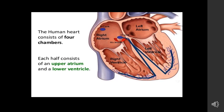The human heart consists of four chambers. Each half consists of an upper atrium and a lower ventricle. The upper two are called the left atrium and right atrium, and at the lower side are the right ventricle and left ventricle — four chambers in total. The atriums or auricles are called receiving chambers as they receive blood from the veins, and the ventricles are referred to as distributing chambers as they pump blood into the arteries.